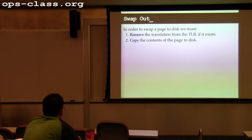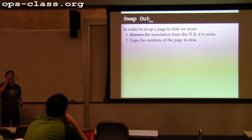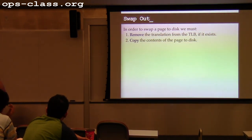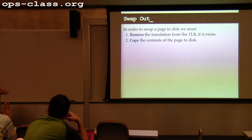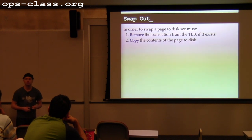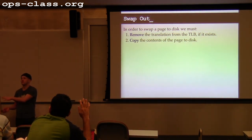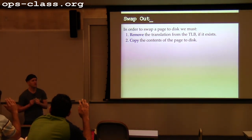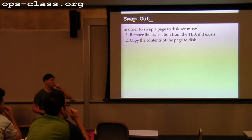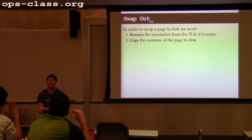So I need to freeze the page state. The first thing I do is remove the translation from the TLB. The second thing is copy the contents of the page to disk. Before I give the page to another process, I'm going to fill it with zeros. The reason: contents on that page are private to the previous process. Imagine Firefox stored your password or credit card number — if I gave that page to a malicious process, it could find that 16-digit number. So we need to zero contents when recycling pages.